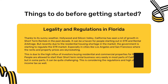Things to do before getting started. Thing number one: legality and regulations in California. Thanks to its sunny weather, Hollywood, and Silicon Valley, California has seen a lot of growth in short-term rentals in the past decade. It can be a haven for people starting out in rental arbitrage. But recently, due to residential housing shortages, the government is starting to regulate the short-term rental market, especially in cities like Los Angeles and San Francisco where rents and property prices are skyrocketing.